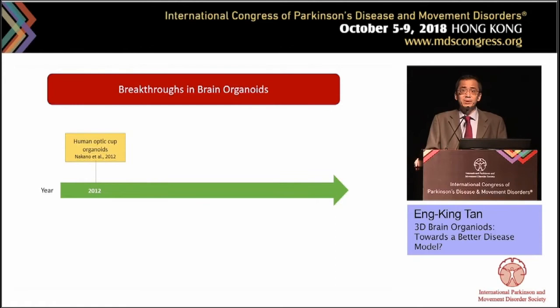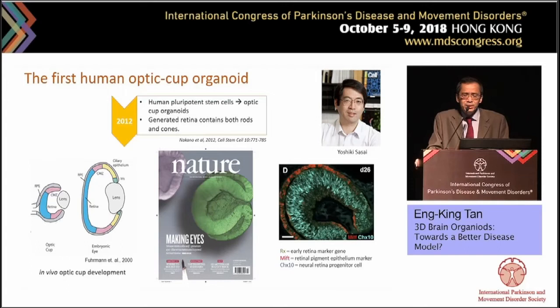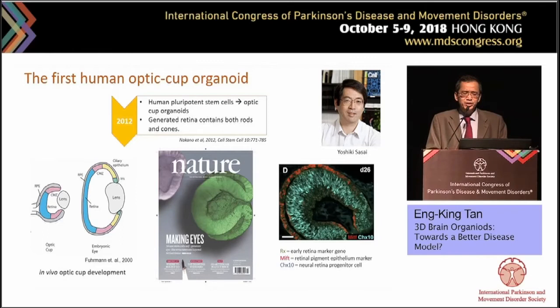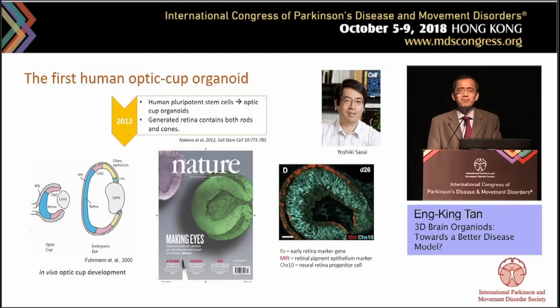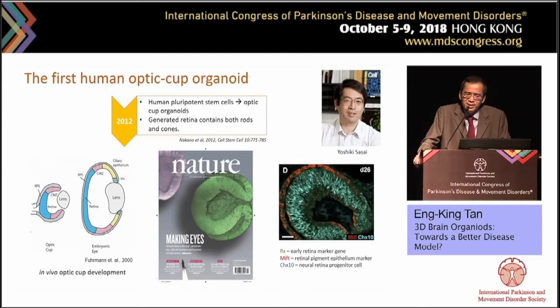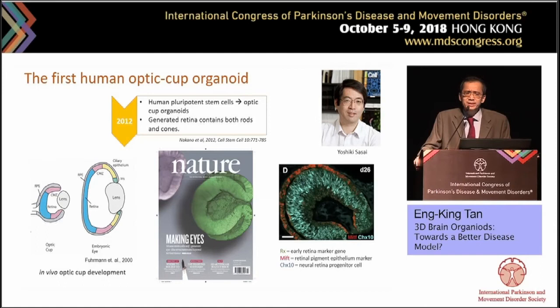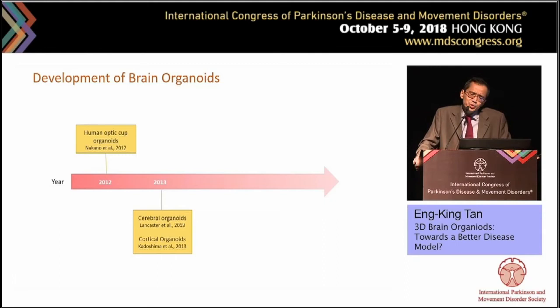These breakthroughs in technology set the stage for everybody to develop the first brain organoid. Not surprisingly, Dr. Sasai's group was the first. Looking at the picture on the left side you can see the embryonic eye and the optic disc, and on the Nature cover you can see a beautiful, almost exact replica of the optic disc — though the lens has a small gap because it is not derived from the neuroepithelium. Figure D shows red markers for retinal pigmented epithelial cells, demonstrating that these retinal cells contain both rods and cones. This was a huge step.